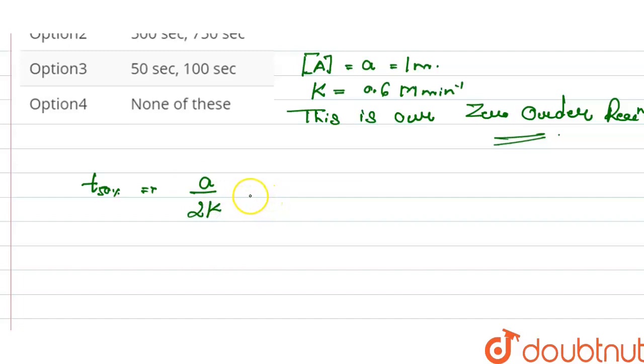2 multiplied by k is 0.6, so it becomes 1 over 2 times 0.6 mole per liter per minute. Here mole cancels out and minute remains.